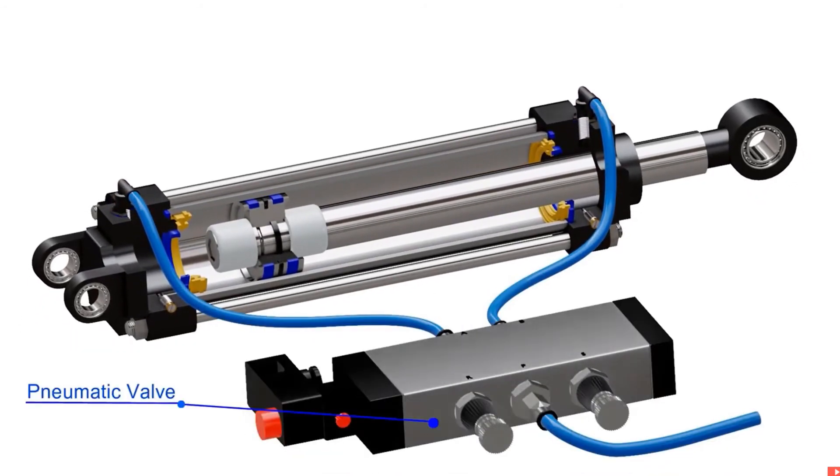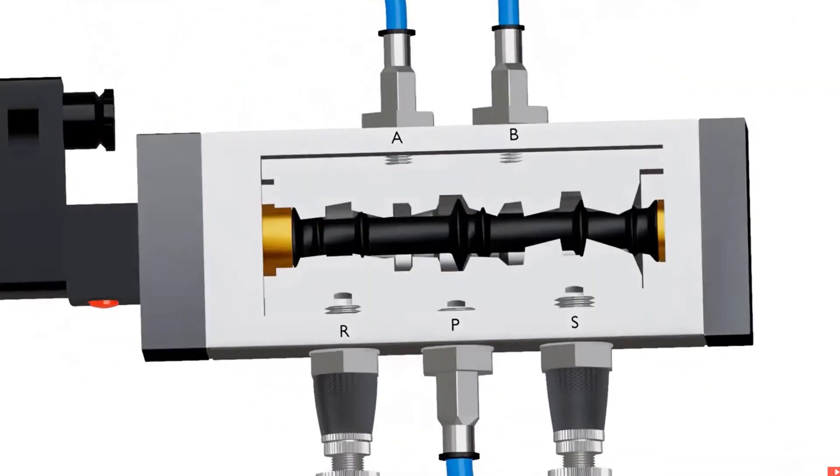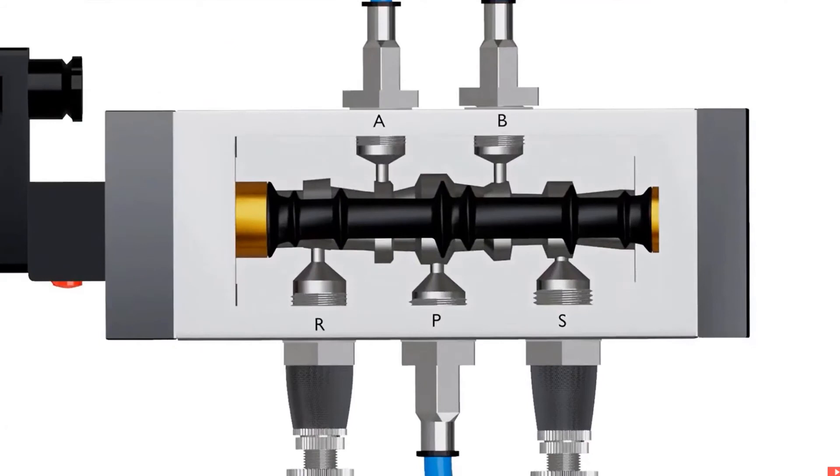A pneumatic valve is connected to these air ports using pneumatic hoses. The valve shown here is a five port, four-way valve. The ports A and B are connected to the cylinder. Port P is connected to the compressed air supply unit. Ports R and S are exhaust ports to which the pneumatic mufflers are attached.